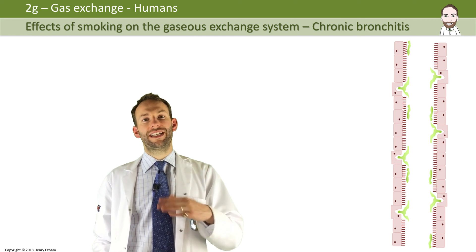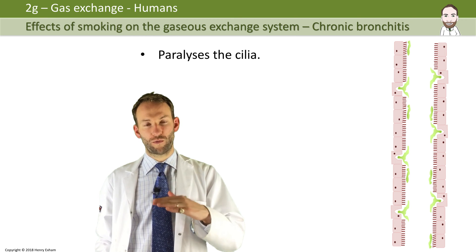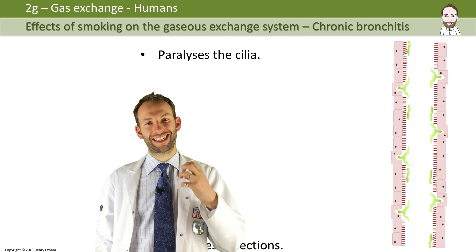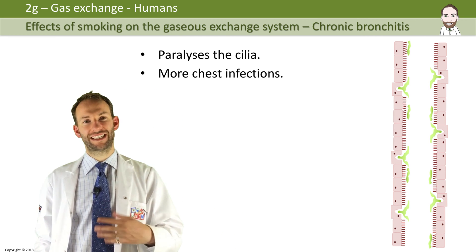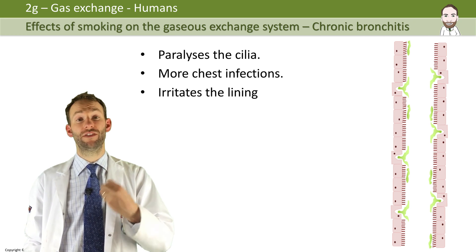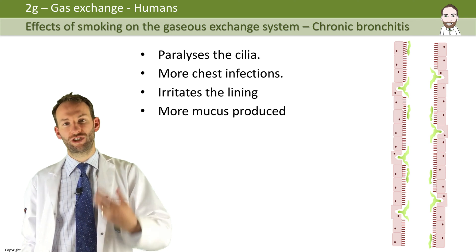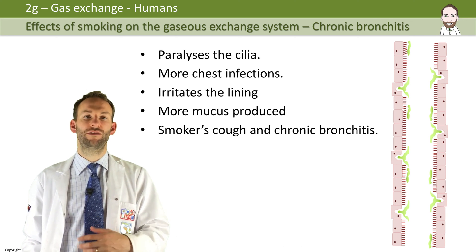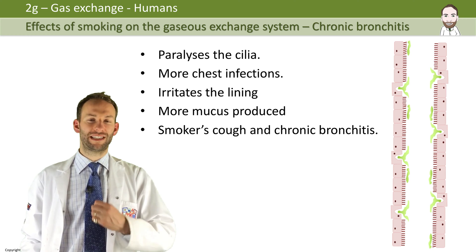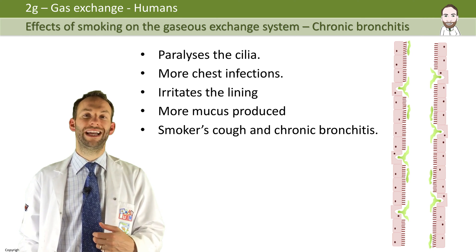However, when you smoke, the cilia get paralysed — the tar causes the cilia to stop working. If they're not working, the mucus doesn't get moved and stays there. You end up getting lots of chest infections and bacteria. The tar also irritates the lining and you produce even more mucus which gets trapped. Eventually you develop a cough to try and shift the mucus all the time — we call it smoker's cough. We call this whole process chronic bronchitis: this inflammation of the bronchi, constantly. It's chronic — it doesn't go away long term.